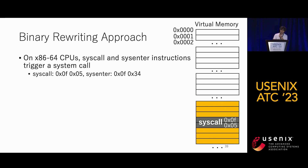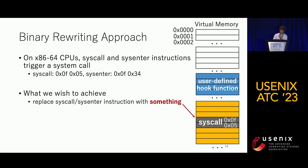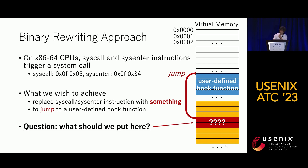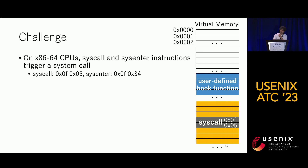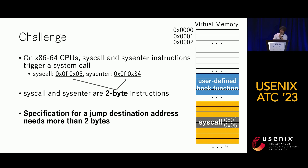On x86 CPUs, syscall and sysenter are the two-byte instructions to trigger a system call. This figure illustrates the virtual memory address space. We have a syscall instruction, and what we wish to achieve is to replace it with a jump to a user-defined hook function. The challenge is that syscall and sysenter are two-byte instructions, but the specification for a jump to an absolute address already requires more than two bytes — so the subsequence instructions would be overwritten, leading to unexpected behavior.